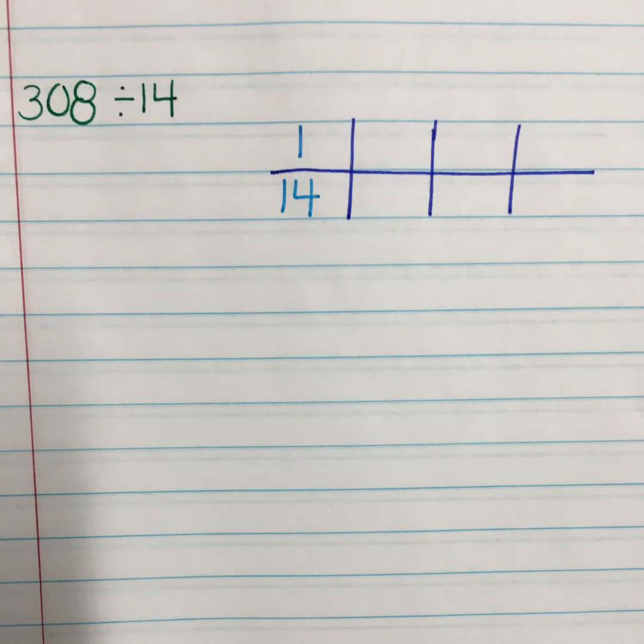We already know that we can get 14 to 280. And 280 is really close to 308. So I'm thinking, let's use what we already know. Ultimately, with partial quotients, we just want to get as close as we can to the dividend in order to get to our quotient. So we're using partial quotients in order to get there. And a ratio table is an excellent way to document this.